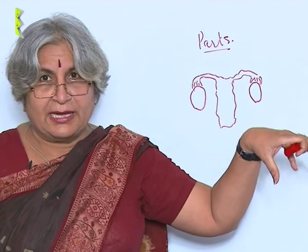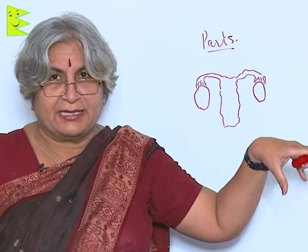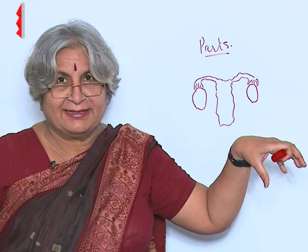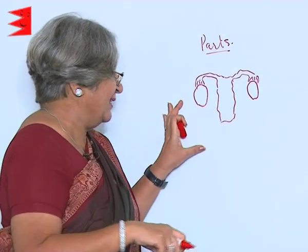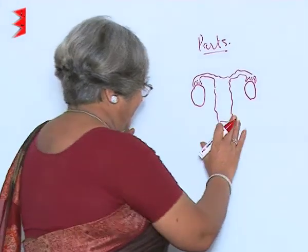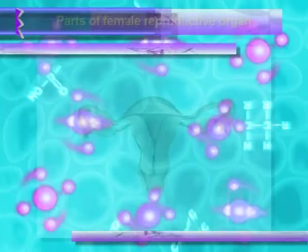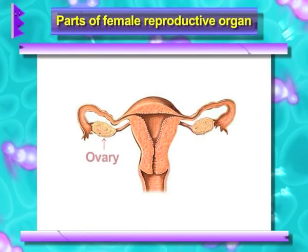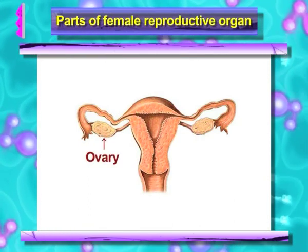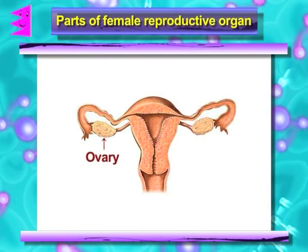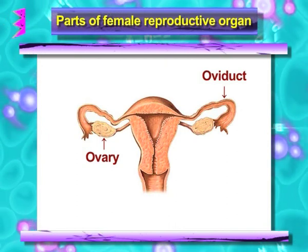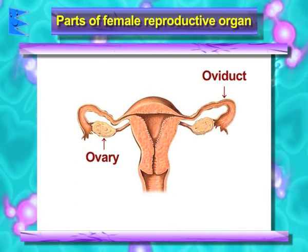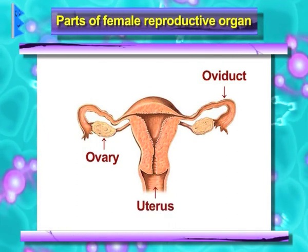Doesn't it look like somebody is standing and holding eggs? So this is the ovary, this is the oviduct, and this is the uterus.